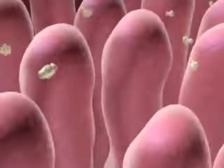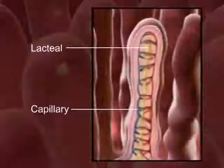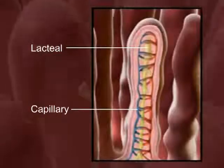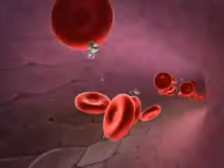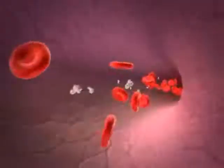The walls are covered with villi where nutrient absorption takes place. The structure of each villus contains a capillary and lacteal to pick up the digested nutrients. The nutrients are then transported by the blood to all the cells of the body.